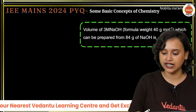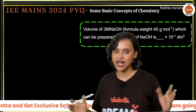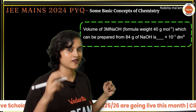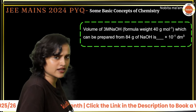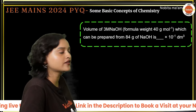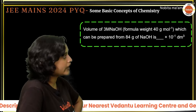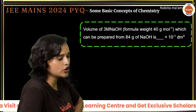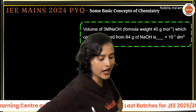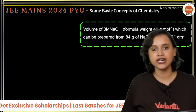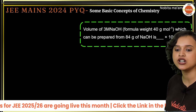Please comment below and let us know that you are liking this series. The fourth question: what volume of 3 molar NaOH (formula weight = 40 g/mol) can be prepared from 84 grams of sodium hydroxide? The answer is expressed as 10⁻¹ dm³. We need to find the volume.